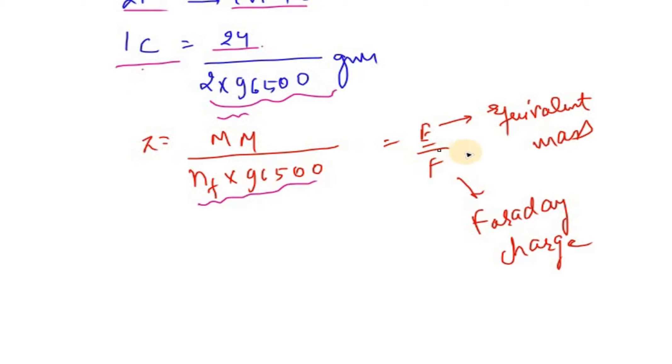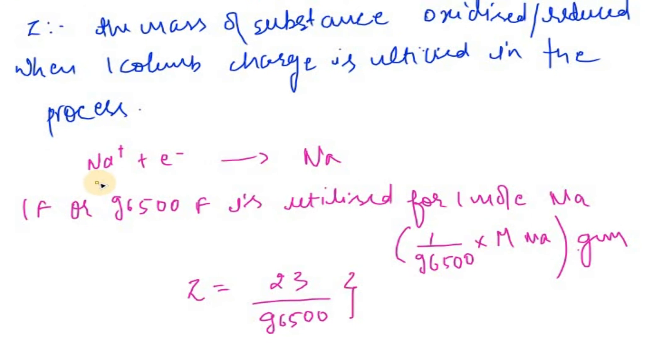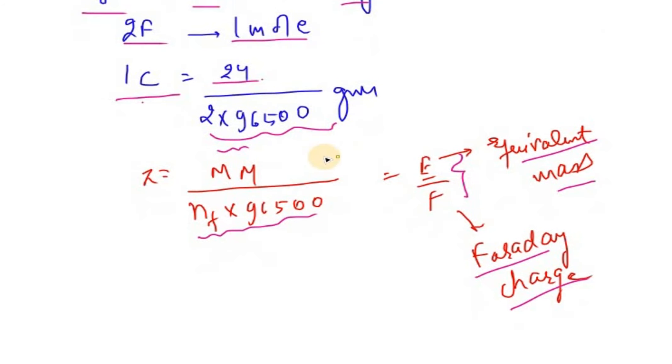W is directly proportional to Q, and Q when we replace it is IT, where Z is the proportionality constant. Q is charge times time. When Q is one coulomb, then mass is Z.